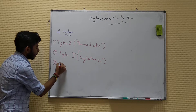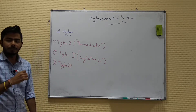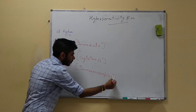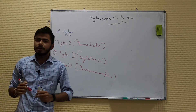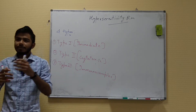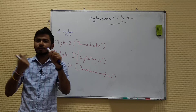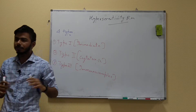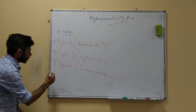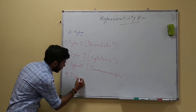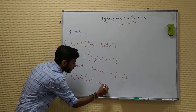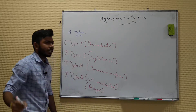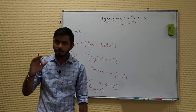Type 3 hypersensitivity involves an immune complex. An immune complex is formed whenever an antigen binds with an antibody — that combination is called an immune complex or immunocomplex. We'll talk about how this immunocomplex disturbs the body's machinery later. Type 4 hypersensitivity is cell-mediated.